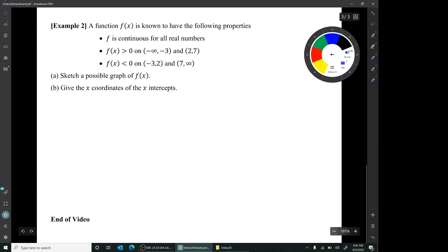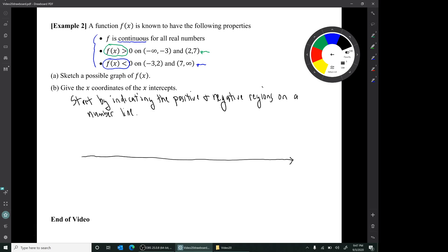Let's go on to the next example. In example two, we're given some specifications for a function. These three things: The function is known to be continuous for all real numbers. The y values are greater than zero on these two intervals. And the y values are less than zero on these two intervals. So our first job is to sketch a possible graph of f. Well, I'm going to start by indicating those intervals on the number line. So I'll make a number line. And the important points are x equals negative three, x equals two, and x equals seven.